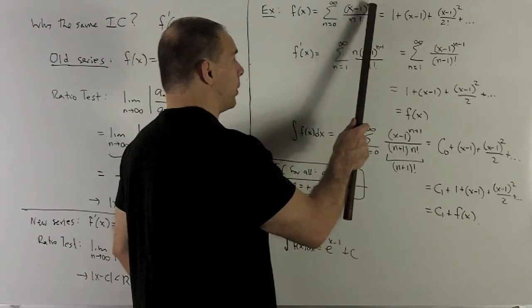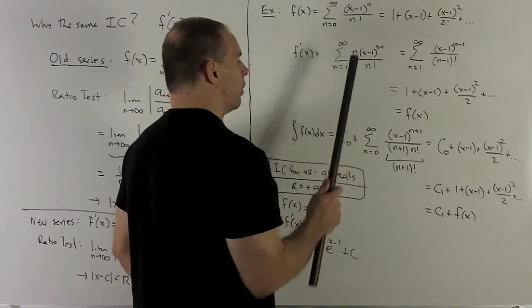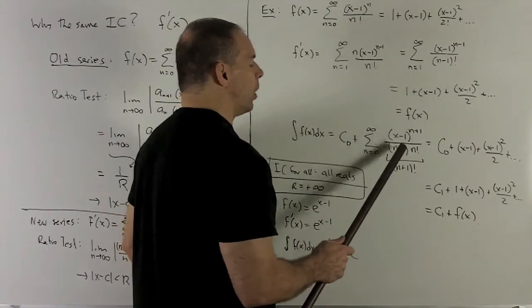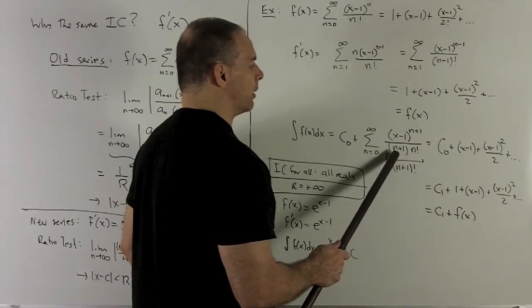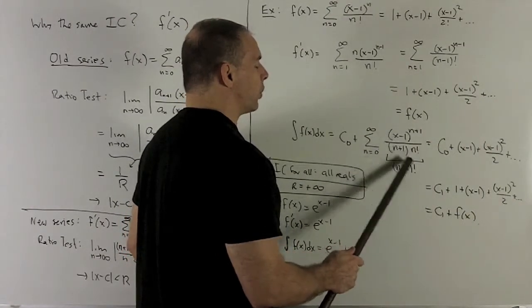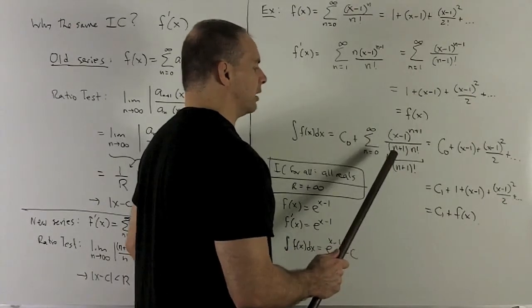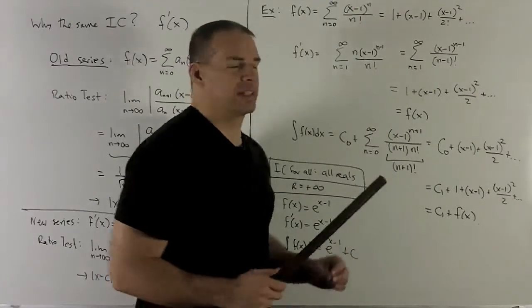We're going to take a look at the exponent, add 1, flip it over. So we get an n+1, flipping it over gives me an n+1 on the bottom. And as before with the derivative, we're going to get something that combines nicely in the bottom.